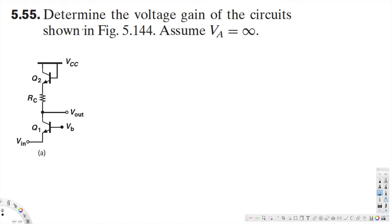What's going on guys? Let's do this problem right here. The question is asking: determine the voltage gain of the circuit shown in figure 5.14. Assume Va is equal to infinity.